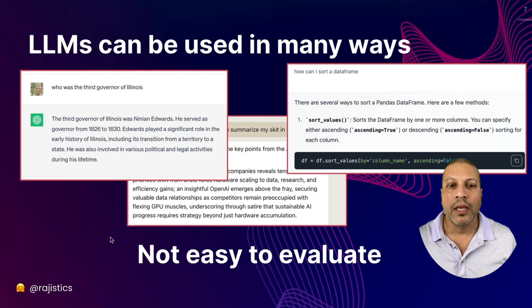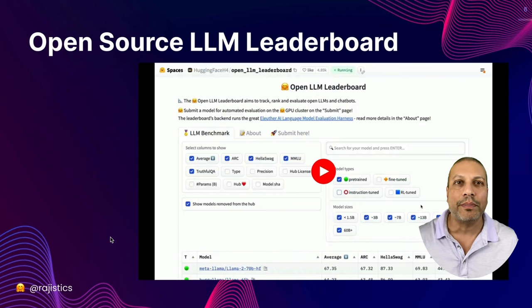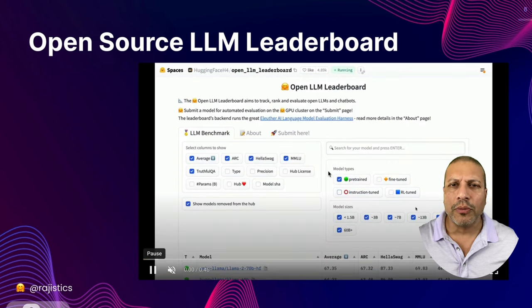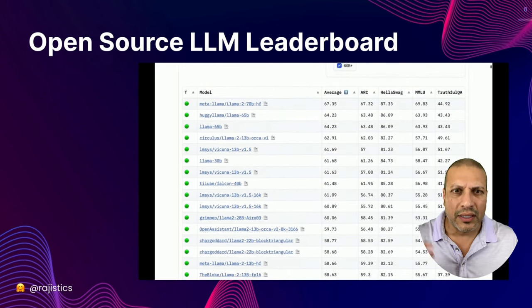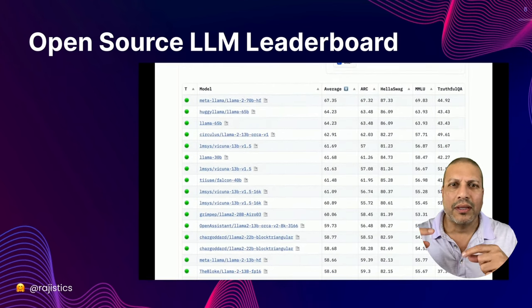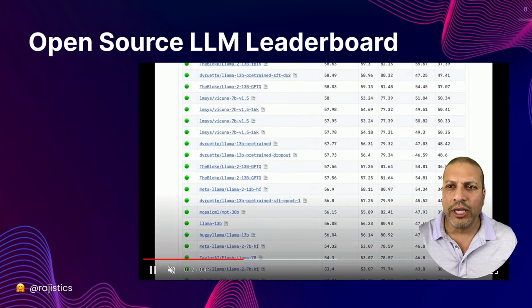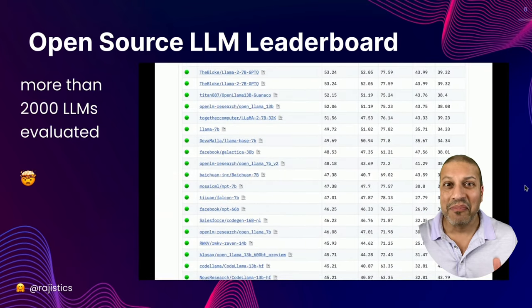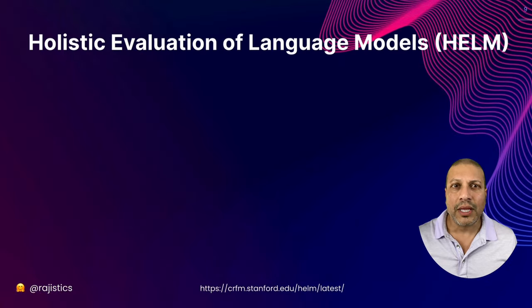Someone might say go use the Hugging Face leaderboard — it's a great place to start and very popular. You pull it up to decide on a model, but then you start looking and there's model after model after model. If you keep scrolling you'll see there's over 2,000 models. That's a little too overwhelming.